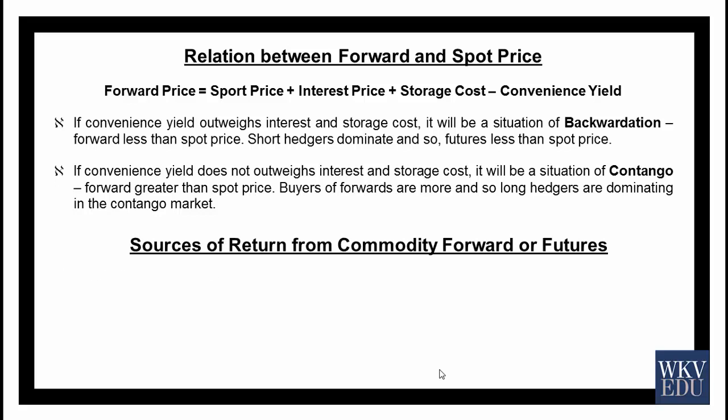The sources of return from commodity forwards or futures are: first, change in spot price — as the spot price changes, so does the forward price, leading to a gain or loss. Second, collateral yield — when we take a position in commodity forwards or futures, we keep margin which can be in the form of collateral security, cash, shares, etc. Daily repricing is done, and an active fund manager manages which collateral to keep and when, earning a return and managing margin calls.